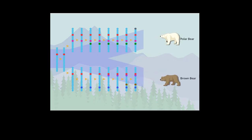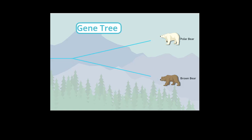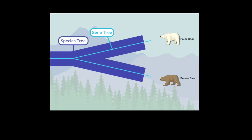Scientists have calculated the rates at which certain types of DNA changes accumulate. They can compare differences in a segment of DNA between living species to estimate when that DNA segment began to diverge. A tree based on the differences in a gene is called a gene tree, and scientists can use gene trees to help improve their estimates of when species split.